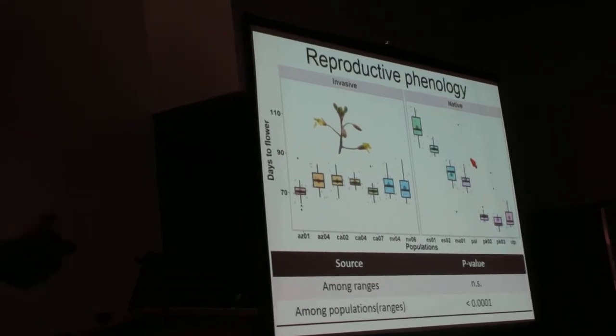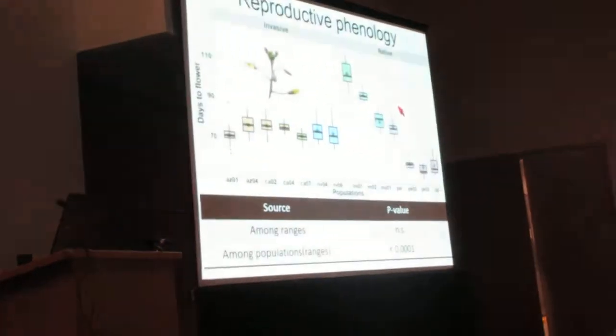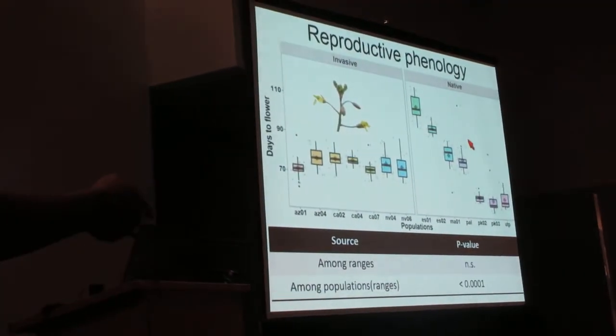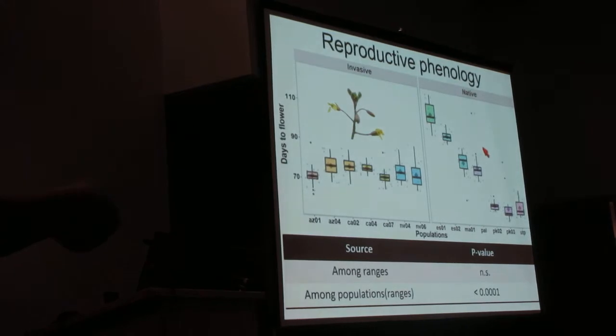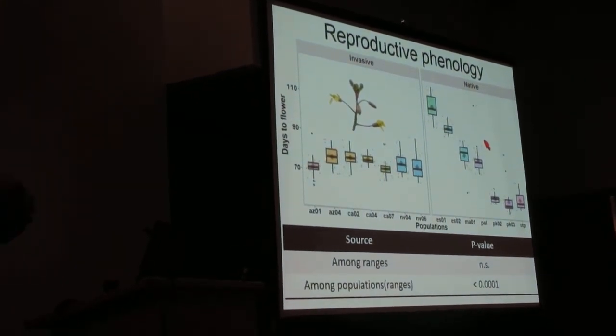But even with that striking variation, I didn't find any variation among ranges. I used a mixed effects model with ranges as a fixed factor and among population within ranges as a random term, if you're interested.